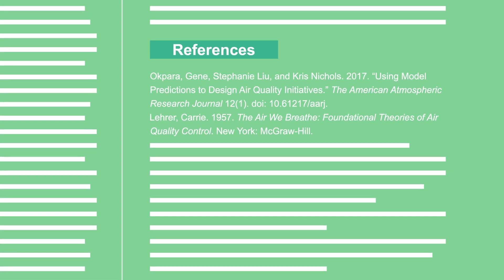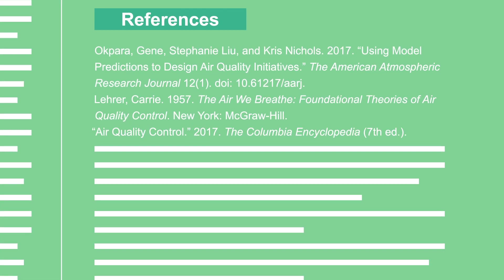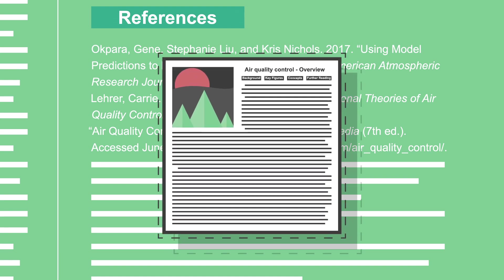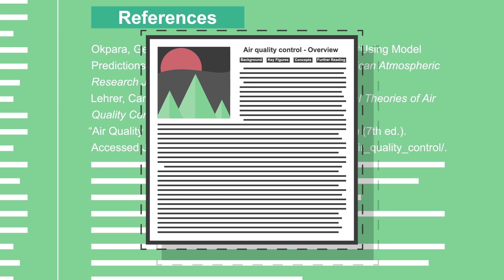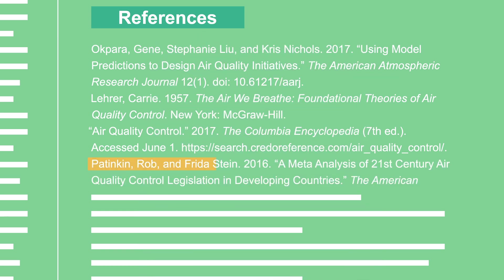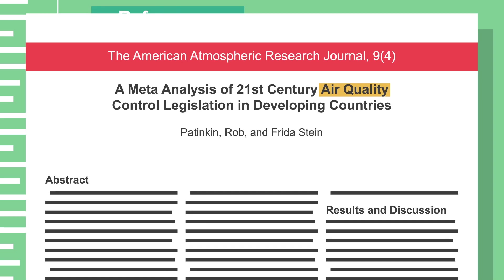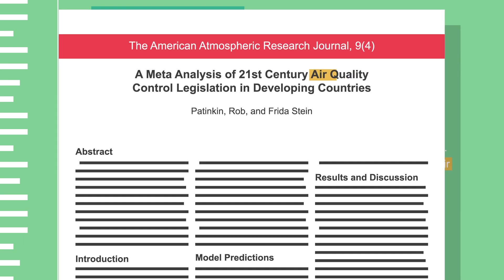The value of a source depends on its relevance to your research question. First, consider how much the resource covers. For background information, try an overview article or encyclopedia entry. For more in-depth information, you'll want to consult sources that discuss your specific research topic. Closely analyzing what a resource does or doesn't discuss will help you choose sources that align with your research need.